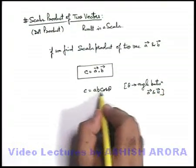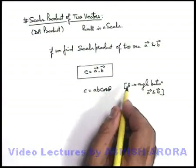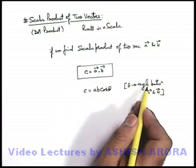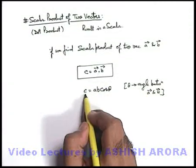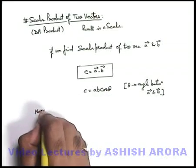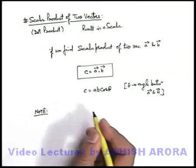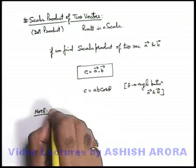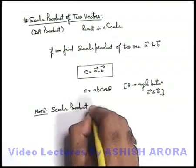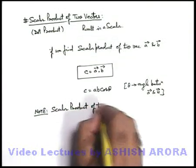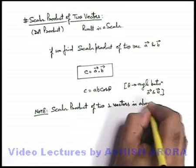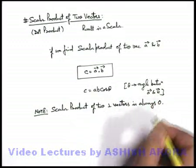Since C = AB cosθ, we can state that if there are two perpendicular vectors — perpendicular meaning the angle between them is ninety degrees — then their scalar product or dot product is always zero. This is a very important property used several times in physics: the scalar product of two perpendicular vectors is always zero.